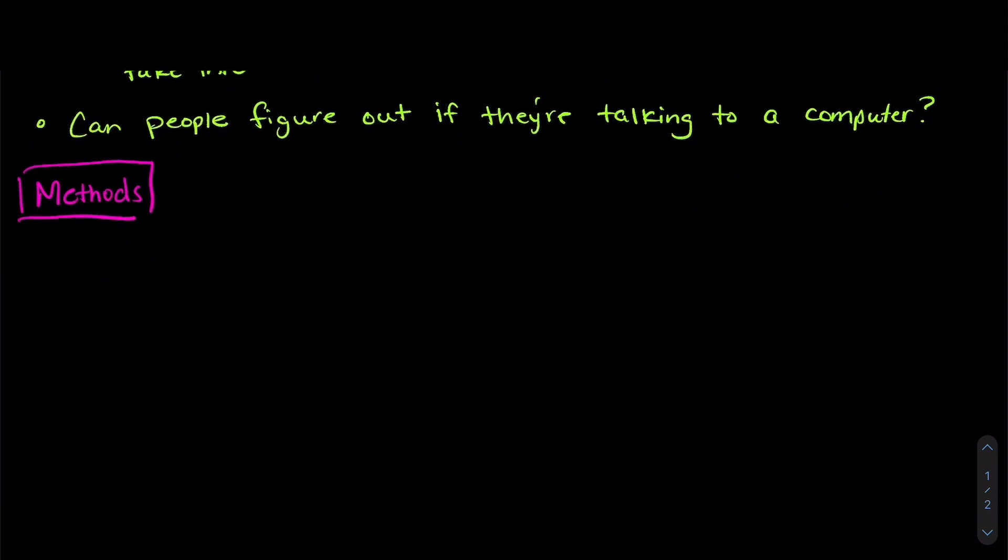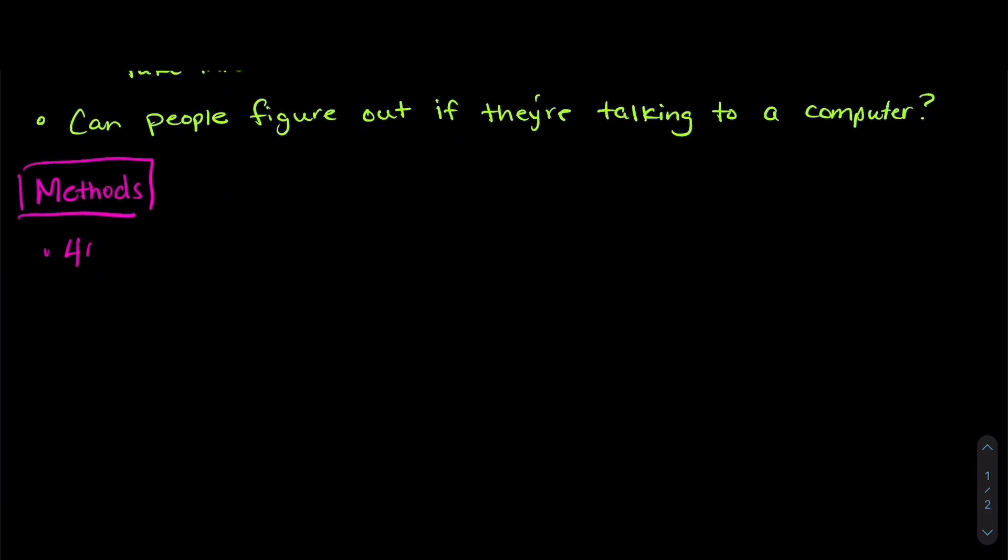Our researchers took 4,600 people and they showed them 16 different bios, biographies. Half of these were actually written by artificial intelligence and half were written by real people. When they were looking at the bios, they asked the people why they made the decisions that they did about whether they thought the bio was made by a real person or by artificial intelligence.